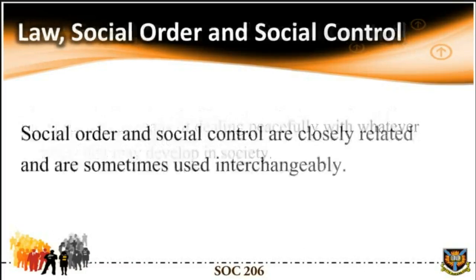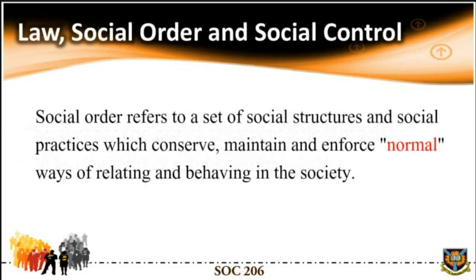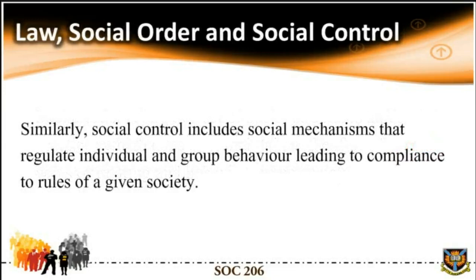Social order and social control are closely related and are sometimes used interchangeably. Social order refers to a set of social structures and social practices which conserve, maintain, and enforce a normal way of relating and behaving in the society. Similarly, social control includes social mechanisms that regulate individual and group behavior, leading to compliance to rules of a given society.